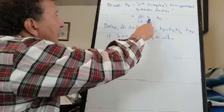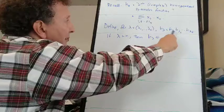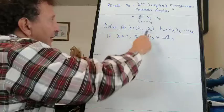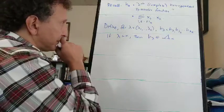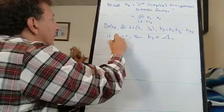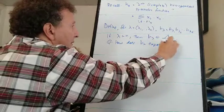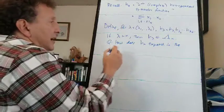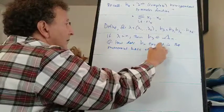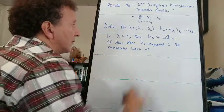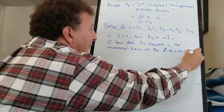This is because h_{lambda_1} is homogeneous of degree lambda_1, h_{lambda_2} is homogeneous of degree lambda_2, and if we add all the degrees together and they sum to n, that puts h_lambda into the space of degree-n symmetric functions. So we could ask: how does h_lambda expand in the monomial basis of the Z-module Lambda_n?